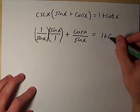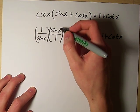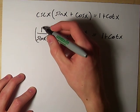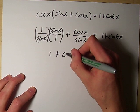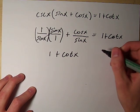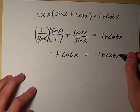And that's going to equal 1 plus cotangent x. And when these cancel out this becomes 1, so we get 1 plus cotangent x equals 1 plus cotangent x.